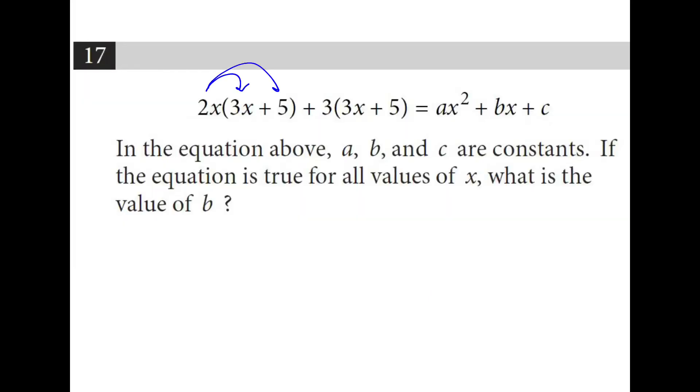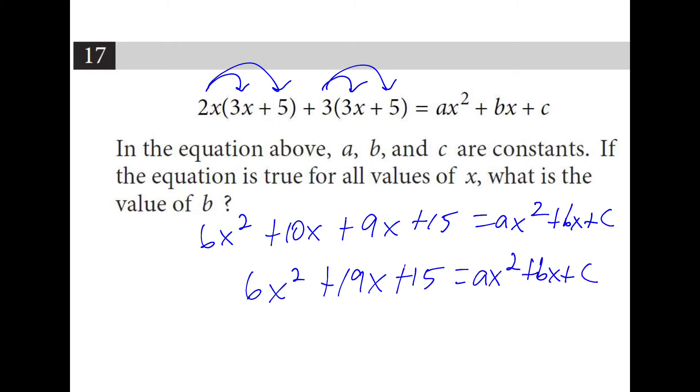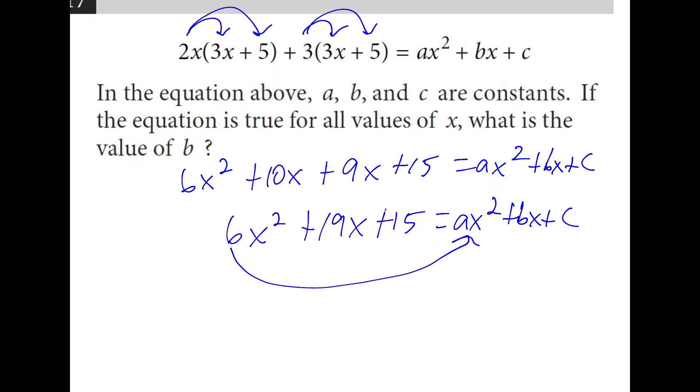First I'll distribute the two x and the three. Then I'll combine like terms. And we can see here that six x squared matches up with a x squared. We can also see that 19 x matches up with b x. They want to know the value of b. So the answer is 19.